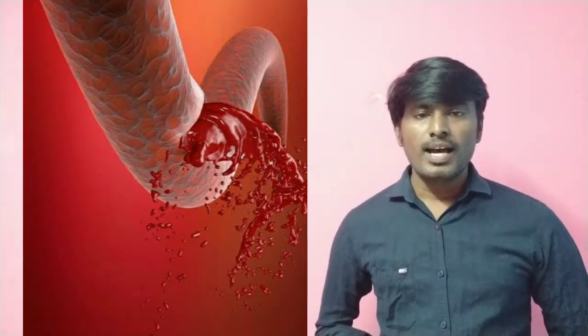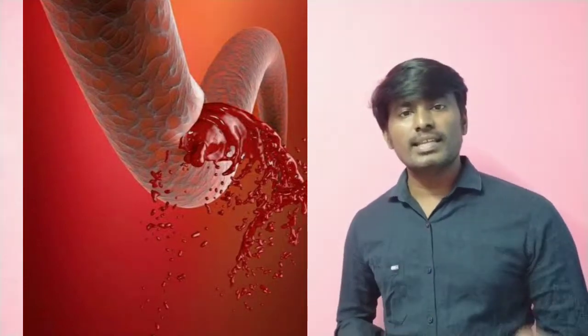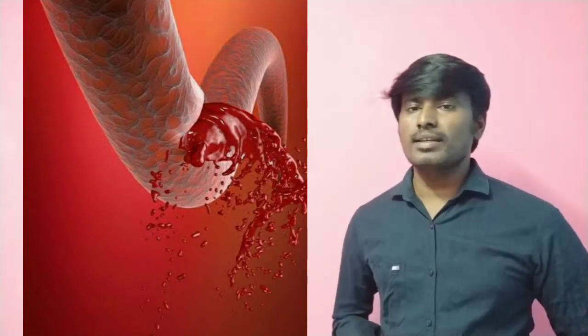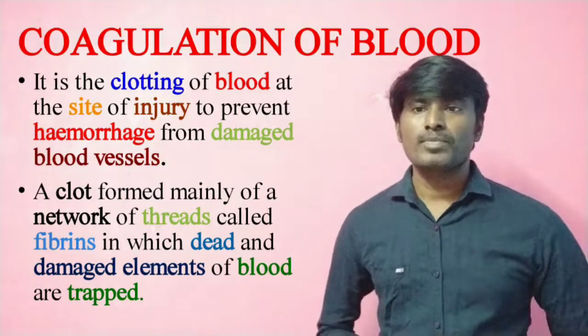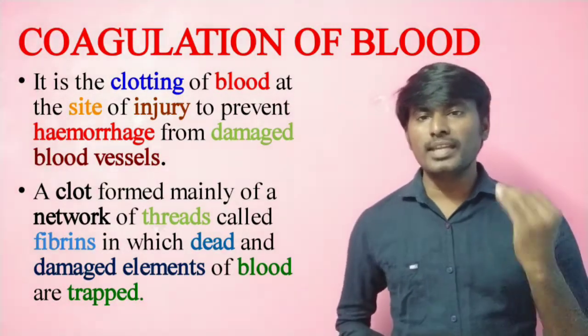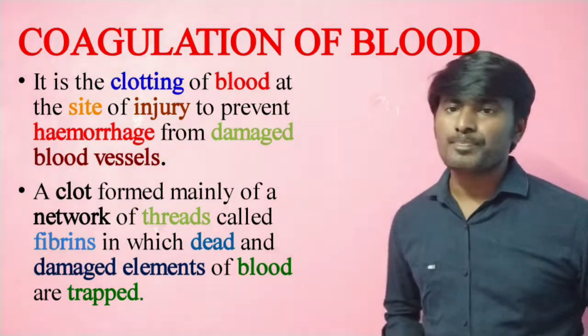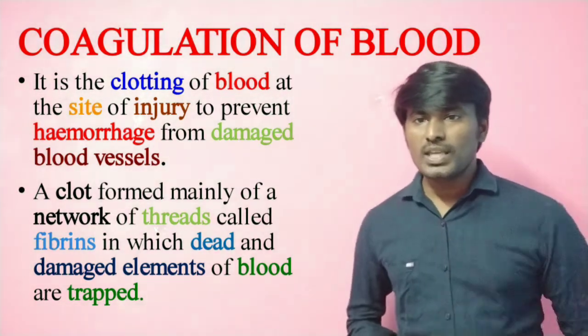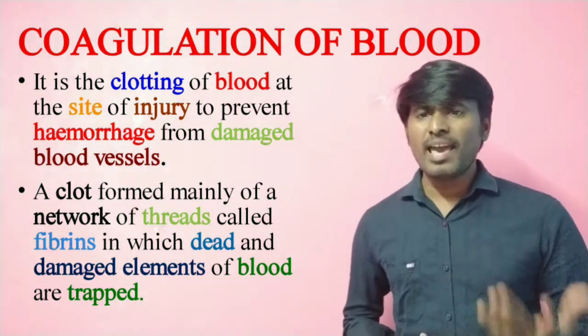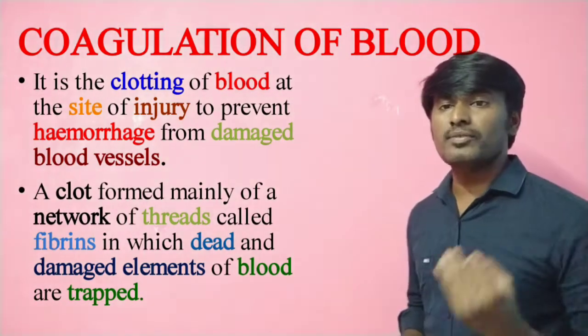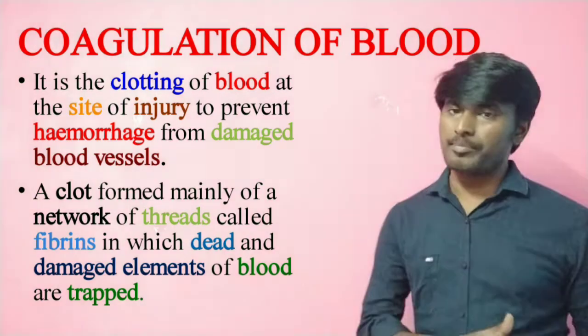What is the clotting? A clot is formed mainly of a network of threads called Fibrin, in which dead and damaged elements of blood are trapped.